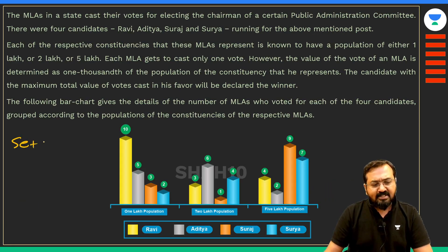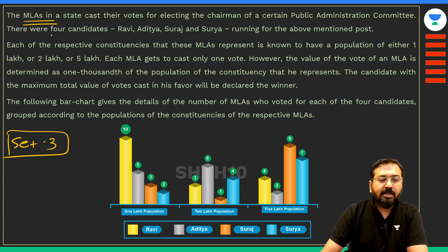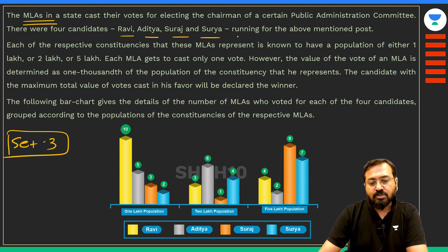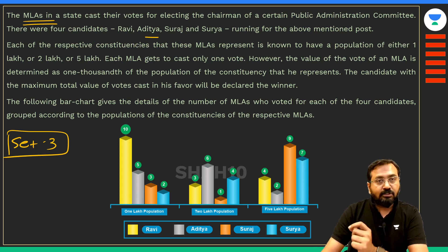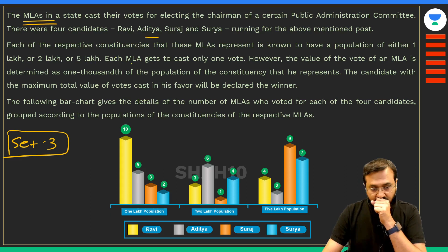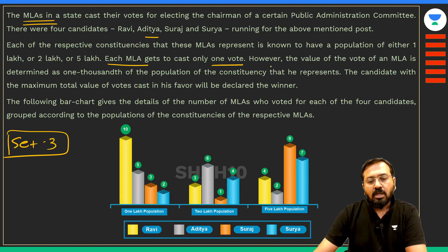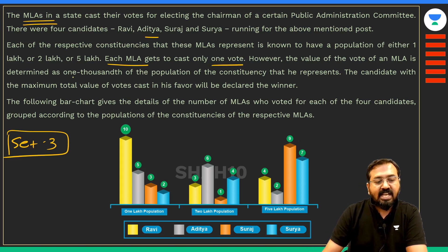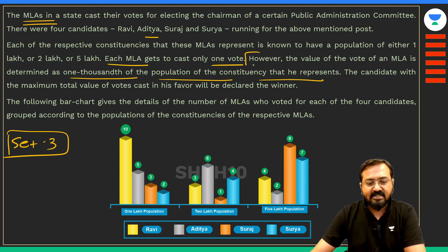Let us move to set number 3 — this is once again a very interesting set. It is about MLAs in a state casting their votes for electing the chairman of a certain public administration committee. There were 4 candidates: Ravi, Aditya, Suraj, and Surya running for the post. Each MLA's respective constituency is known to have a population of either 1 lakh, 2 lakh, or 5 lakh. Each MLA gets to cast only 1 vote. However, the value of an MLA's vote is determined as 1/1000th of the population of the constituency he represents — and this is what makes it more complicated.